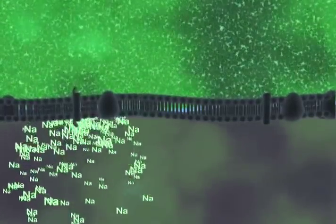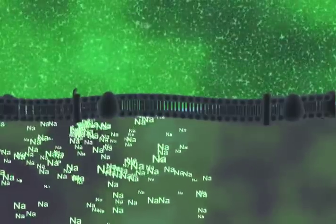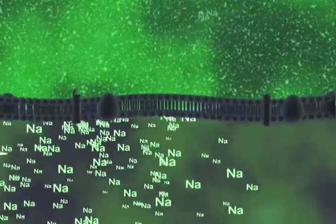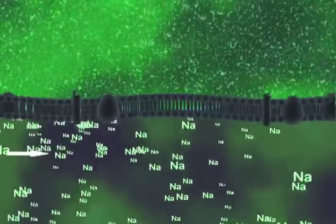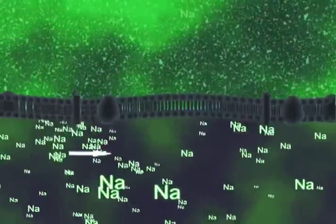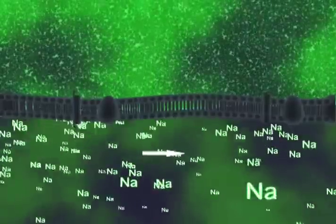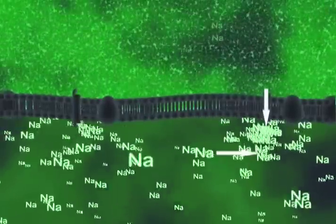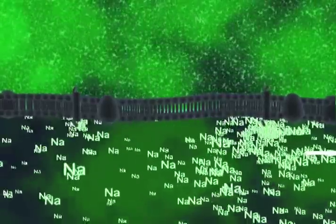As the sodium increases in this area, threshold is reached. Sodium gates open wide, sodium rushes in, causing depolarization, and an action potential. As the sodium enters this area, it diffuses through the axoplasm, and another action potential is created. This continues down the length of the axon.